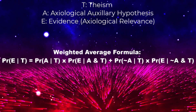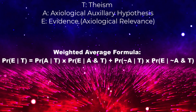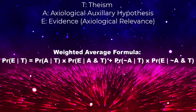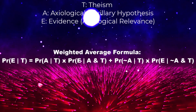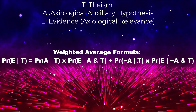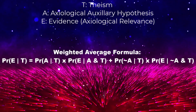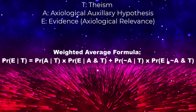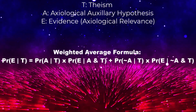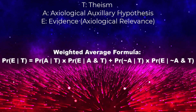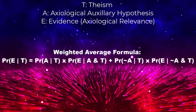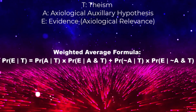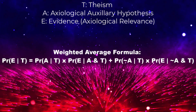Let's apply the weighted average principle within the framework of confirmational holism to explore its impact on the probability of theism. The formula allows us to combine probabilities based on different scenarios to assess the probability of observing evidence E given theism T. Within this approach, the interconnectedness of beliefs means that finding evidence E can have broader implications beyond the direct relationship between E and T, allowing for a comprehensive evaluation of the collective confirmation of the belief system.